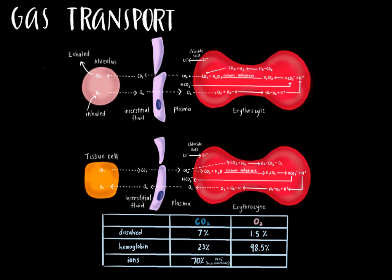Let's begin with the first diagram, which focuses on gas transport and pulmonary gas exchange, occurring at the interface of alveoli and pulmonary capillaries. We'll follow the path of carbon dioxide first, because oxygen can't bind to hemoglobin unless carbon dioxide becomes unbound. Carbon dioxide is transported to the lungs in three forms: dissolved in blood plasma, directly bound to hemoglobin, or as bicarbonate ions with associated H-plus ions bound to hemoglobin. At the lungs, carbon dioxide dissolved in blood plasma simply diffuses into the alveoli. Any carbon dioxide bound to hemoglobin will dissociate and then diffuse into the alveoli.